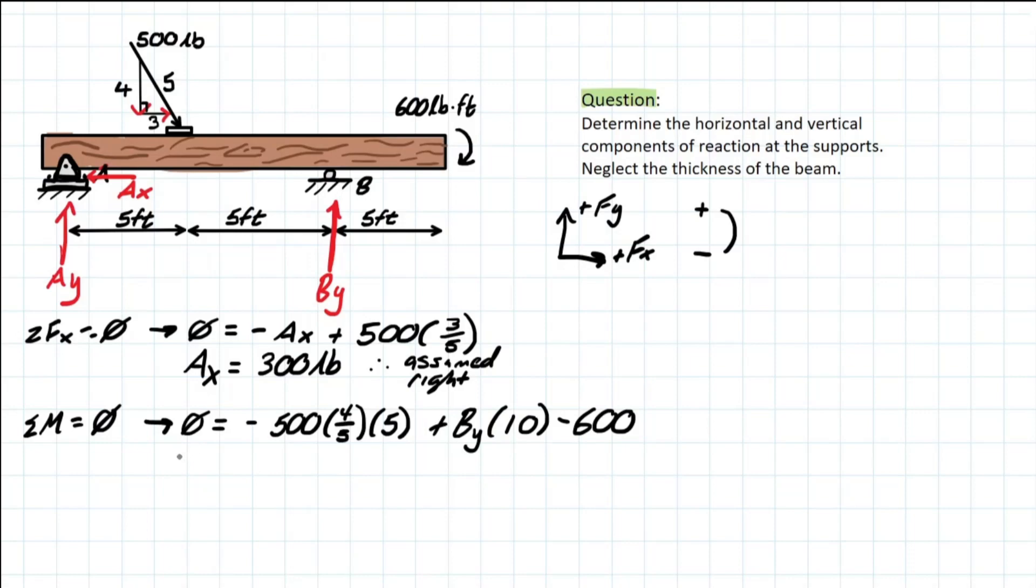Now, what you can do is isolate for By. You bring that over, it's going to be negative, and then you have all of this written again. And you notice that this left side of the equation and the right side of the equation all have negative signs, so these negatives are going to cancel at the end. So when you solve for By, you should be left with a number of 260 pounds, which is positive, which is a good thing. It means our assumptions correct here as well.